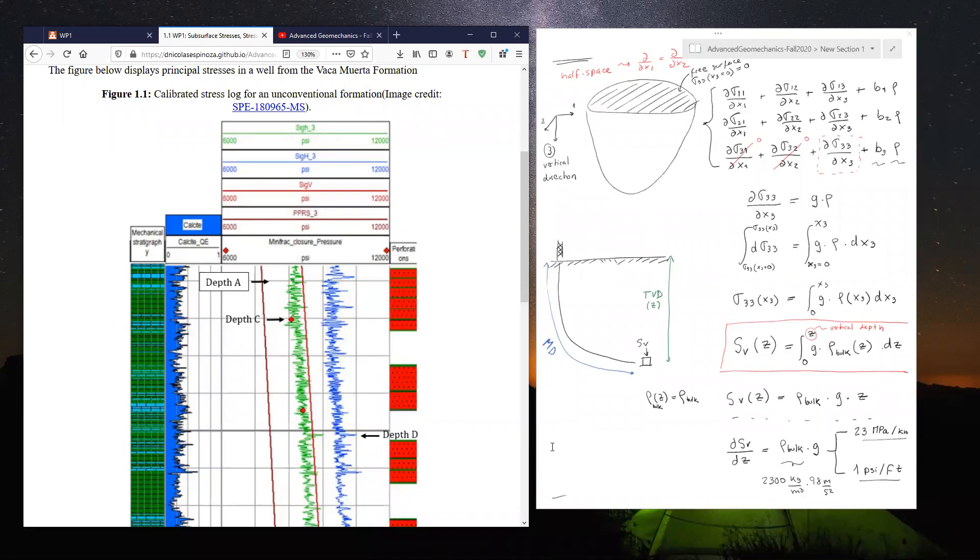Just to give you a rough idea, if we have a vertical stress of, let's say, more or less here 9,000 psi, then that should be more or less 9,000 feet,